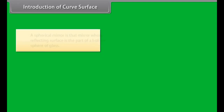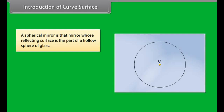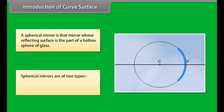A spherical mirror is a mirror whose reflecting surface is part of a hollow sphere of glass. Spherical mirrors are of two types: concave mirror and convex mirror.